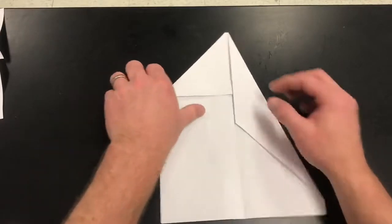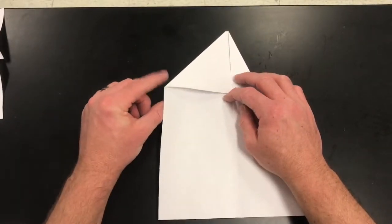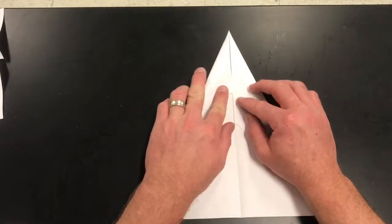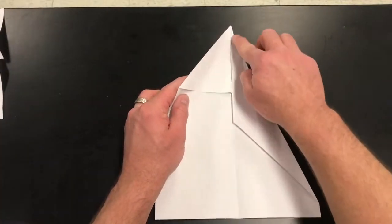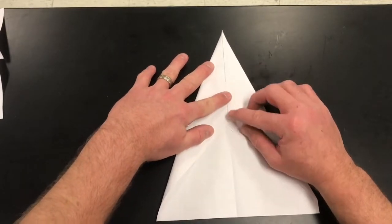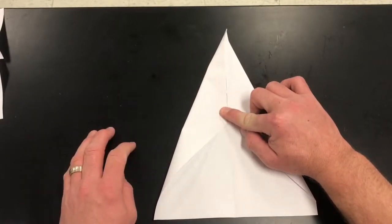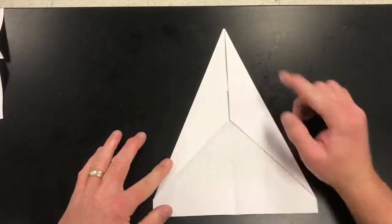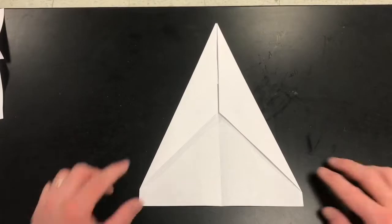And then I'm going to turn it so that this edge is right down the middle. Let's see if I can line that up. There we go. And hold it in place. And on the other side, crease it. Now I've got kind of a tent teepee going on here.